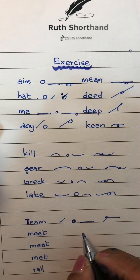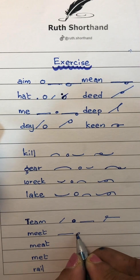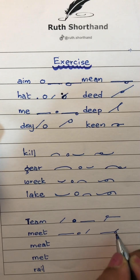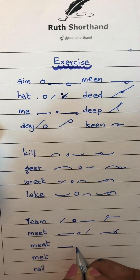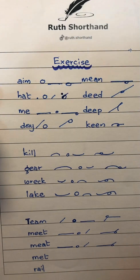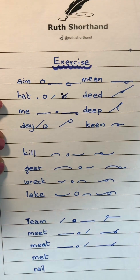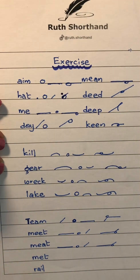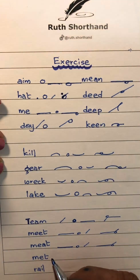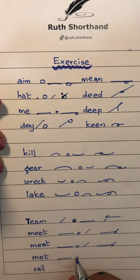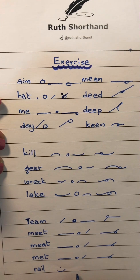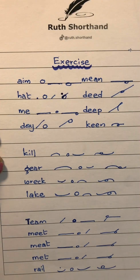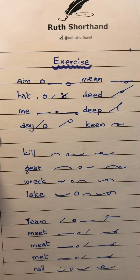Not like this — outside the angle, we have to write this circle. Then 'meet': I-E-T. Meet outside the angle and T — M-E-T — meet. According to the sentence we can get some idea which word is suitable for the sentence. 'Met': M-E-T. This is also 'met'. 'Rail': R-A-L, twice the size of R — rail. R-A-L. I think you can get some idea, please do practice. Thank you.